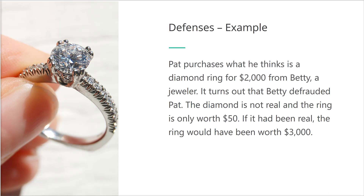Let's assume that a buyer, Pat, purchases what he thinks is a diamond ring for two thousand dollars from Betty, a jeweler. However, it turns out that Betty defrauded Pat and the diamond is not real. If it had been real, the ring would have been worth three thousand dollars. Which remedy should Pat choose? It appears that opting to leave the contract in place and asking for loss of value damages would be the best choice.